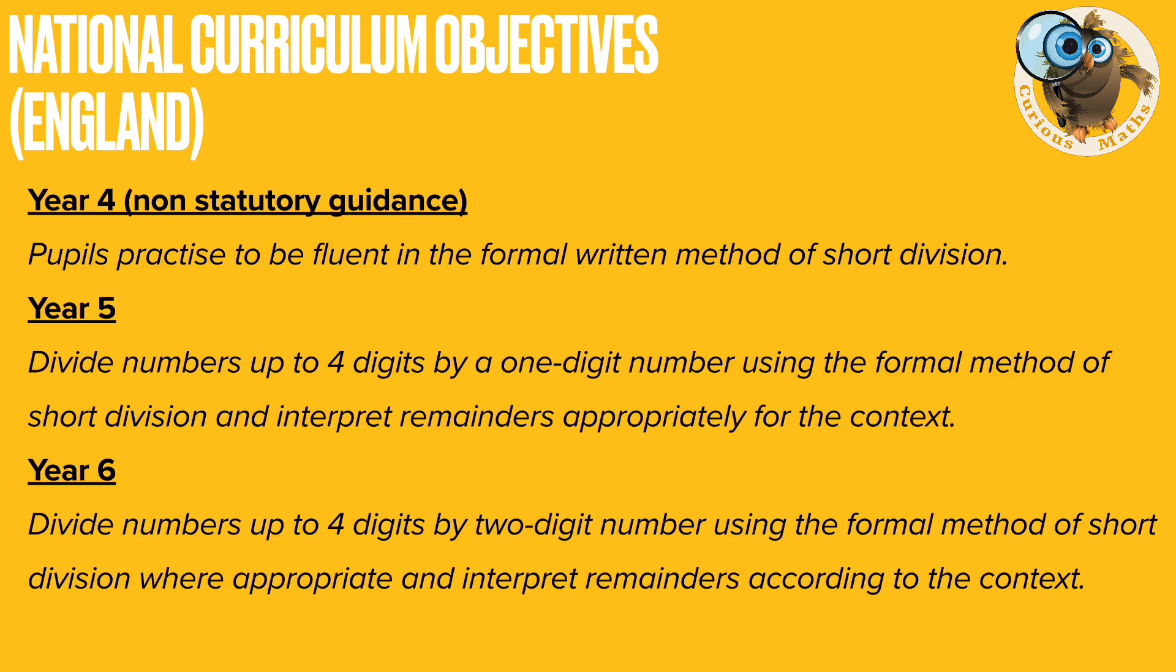By Year 6 they divide up to four digit numbers by a two digit number using the formal method of short division where appropriate because they are also taught the long division method. In both Years 5 and 6 they have to interpret the remainders appropriately or according to the context.